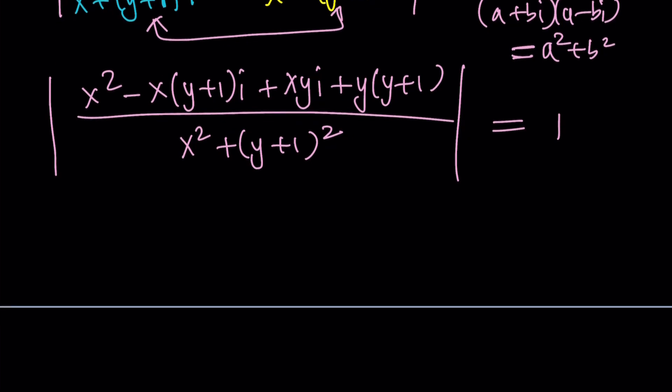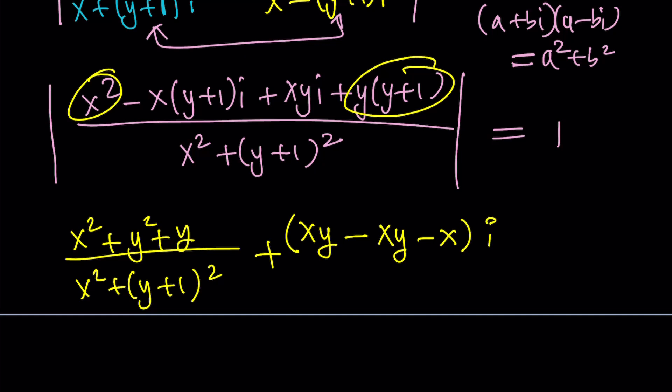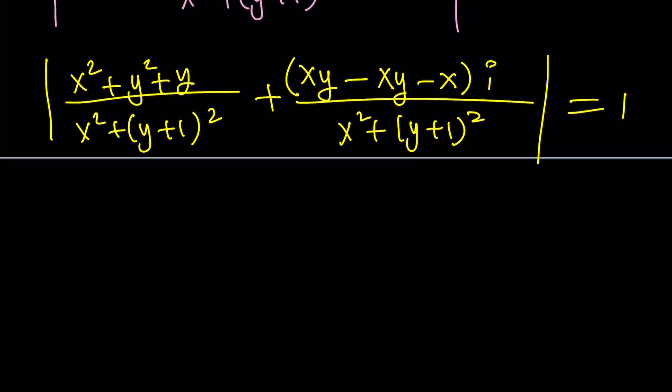Now I need to separate the real part from the imaginary part. If you expand everything, it's going to become x squared plus y squared plus y divided by the denominator. We'll split it up into two fractions. The imaginary part is going to be xy minus x(y+1), which gives x minus xy minus x. The whole thing is the coefficient of i divided by x squared plus (y+1) squared.